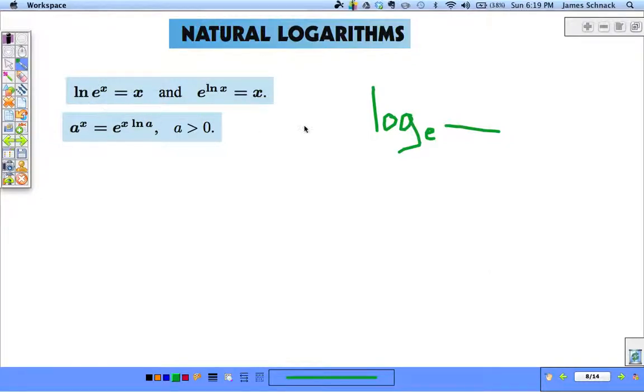We use ln to denote log base e. So ln of e^x - natural log base e of e, that cancels out. So natural log of e and e to the natural log are inverse to each other and we just get x. They undo each other.